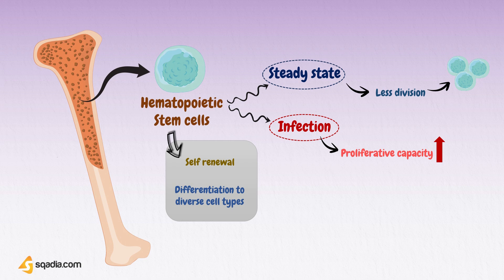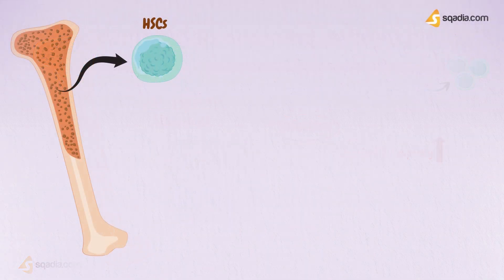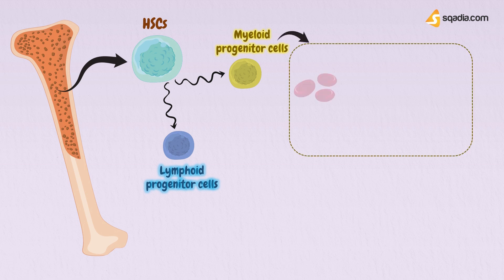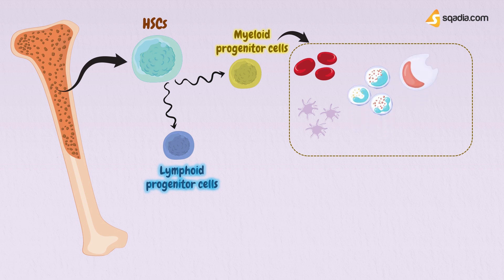HSCs then make one of two lineage commitment choices: either they become myeloid progenitor cells or lymphoid progenitor cells. Myeloid progenitor cells give rise to red blood cells, platelets, and other myeloid cells including granulocytes, monocytes, macrophages, and some dendritic cell populations.